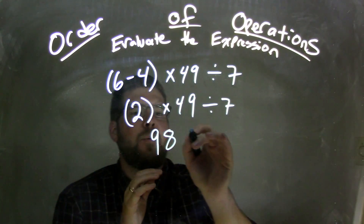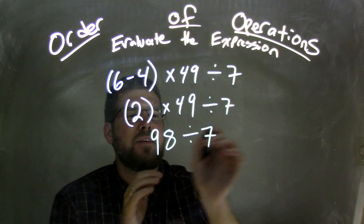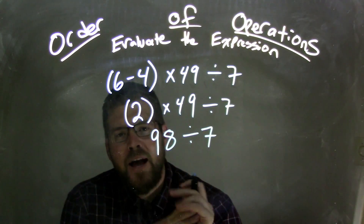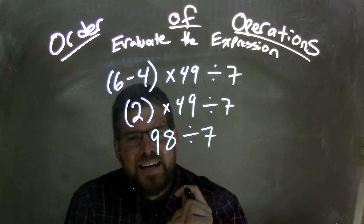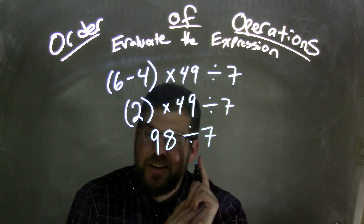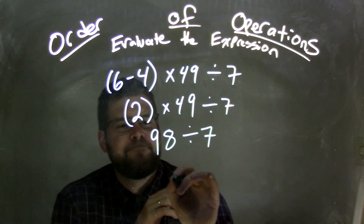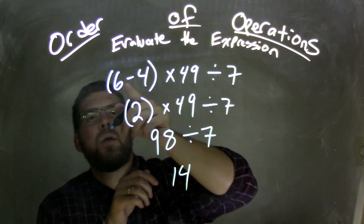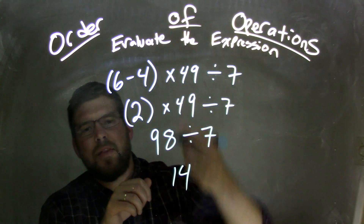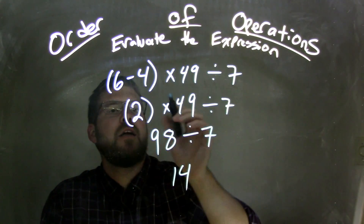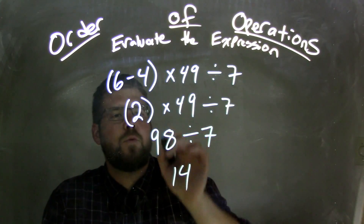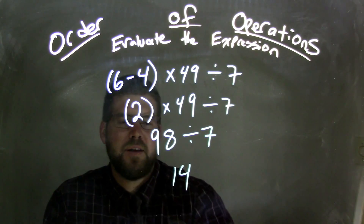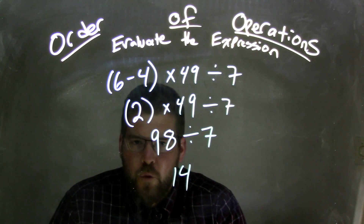So now we have 98 divided by 7. Do we know this off the top of our head? Maybe not, but 98 divided by 7 is 14. And there we go. So we started with subtraction inside the parentheses first to get 2. Then we have 2 times 49, which is 98. Then we divided by 7 and got 14.